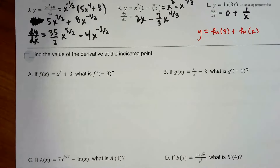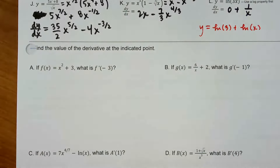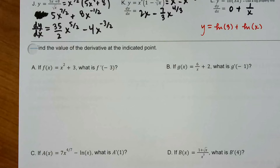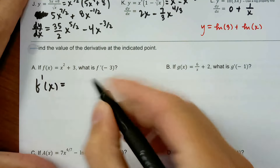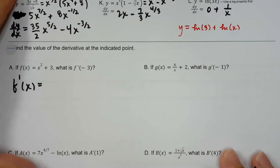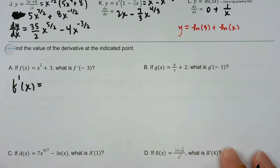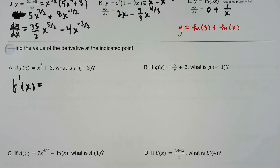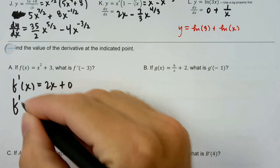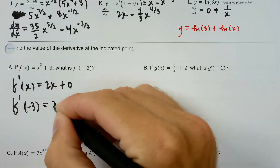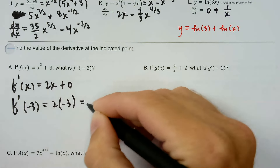Find the value of the derivative at the indicated point — something we're going to need to do a lot in this unit. What we'll want to do first is take the derivative f'(x), and then plug in the value. The way this stuff is scored in free response situations — like the AP exam or the quiz in my class — the first point is going to be for taking the derivative correctly. So f'(x) is going to be 2x plus 0. Then f'(-3) is going to be 2 times negative 3 plus 0, and that's going to equal negative 6.